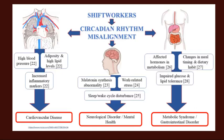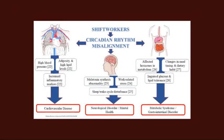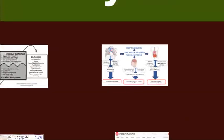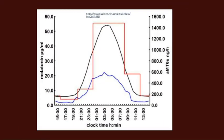Melatonin levels in our bloodstream are highest between around 10 p.m. and 9 a.m., and lowest during the daytime. That pattern is dependent on the message of light: when there's light, melatonin secretion is suppressed; when there's no light, melatonin is secreted.